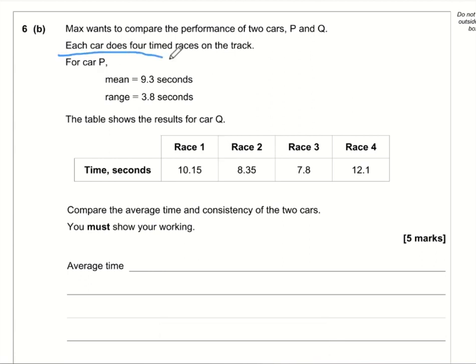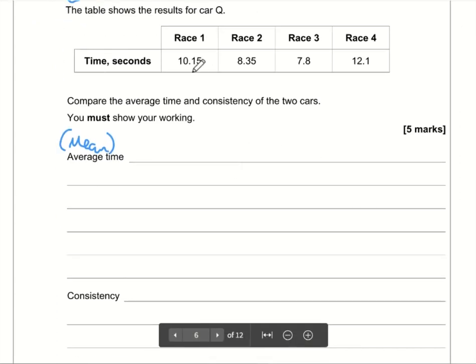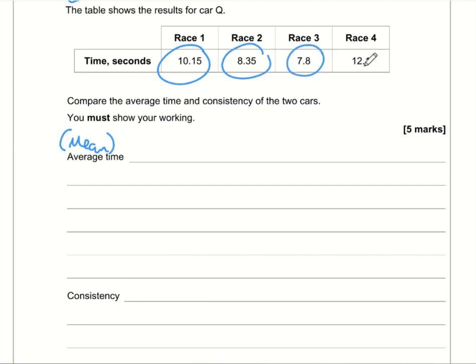So here we've got some information for car P. We've got the mean, which is the average. And we've got the range. Now for car Q, we've just got some times. So first of all, we need to work out the average time. So the average time is going to be these four values added together and then divided by four. So first of all, let's add these values together. 10.15, 8.35, 7.8 and 12.1.